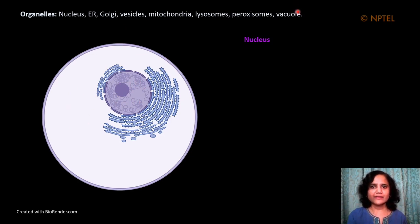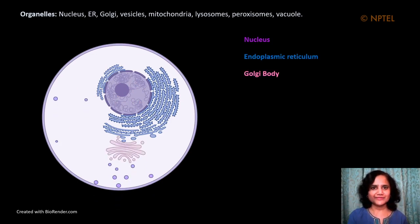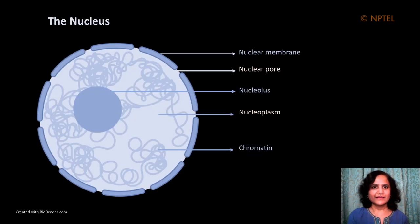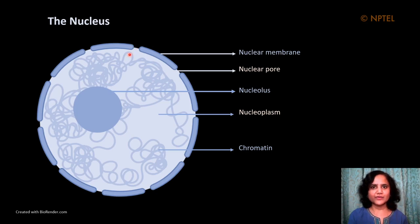Various other organelles are also present in eukaryotic cells as shown here. The nucleus is separated from the cytoplasm by the nuclear envelope shown here in blue, which has two concentric membranes — the outer membrane and the inner membrane. The nuclear envelope is perforated by nuclear pore complexes through which transport of various molecules occurs. The outer and inner membrane are connected or continuous with each other at the nuclear pore.